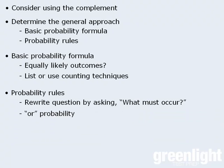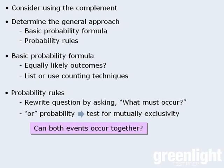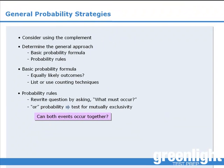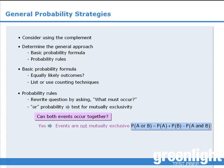If the solution involves an OR probability, determine whether the events are mutually exclusive by asking the question, can both events occur together? If the answer is yes, then the events are not mutually exclusive, and you should use this formula. If the answer is no, then the events are mutually exclusive, and you should use this formula.